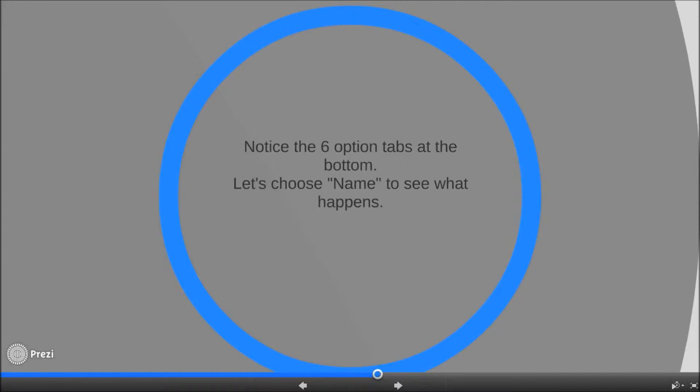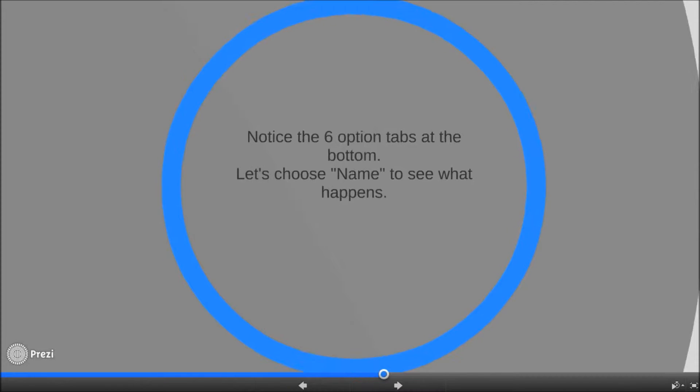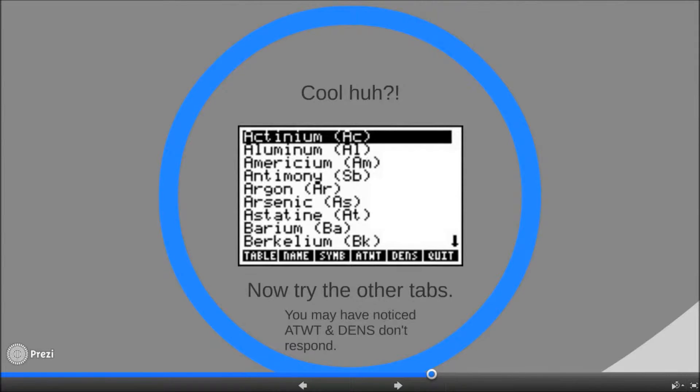Notice the six options tabs at the bottom. Let's choose name to see what happens. Now try the other tabs.